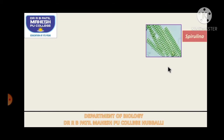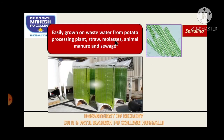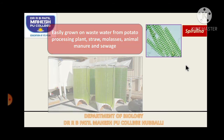Spirulina can be easily grown on waste water from potato processing plants, straw, molasses, animal manure, and sewage. Even in sewage water we can grow Spirulina. We then dry the Spirulina and use it in the form of a powder, and it is given in Ayurvedic medicine as a protein supplement.